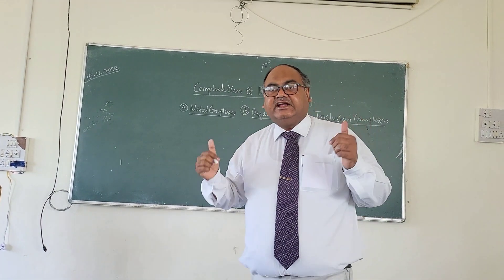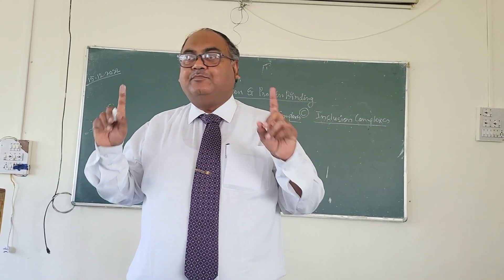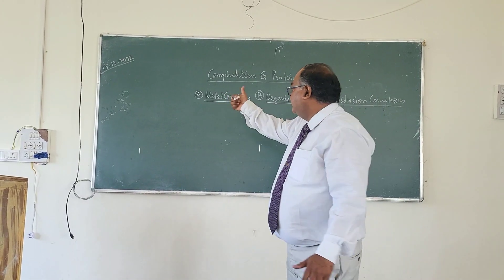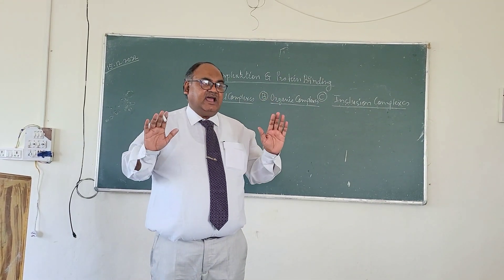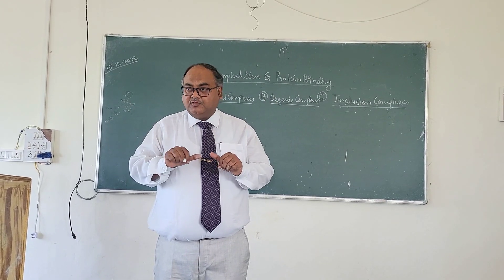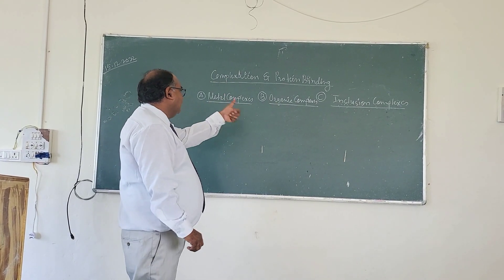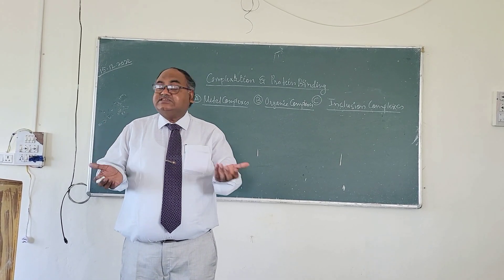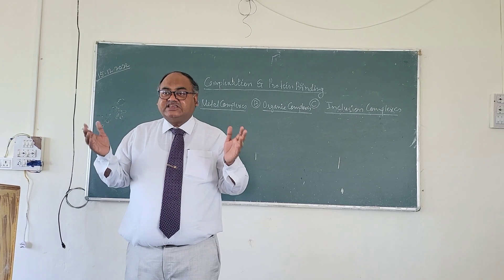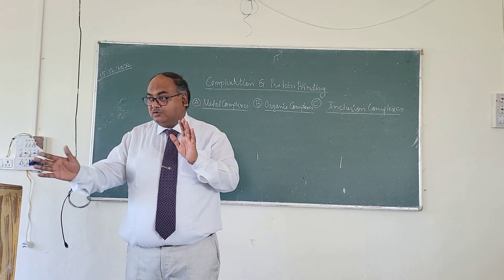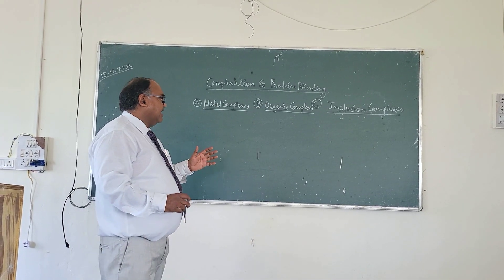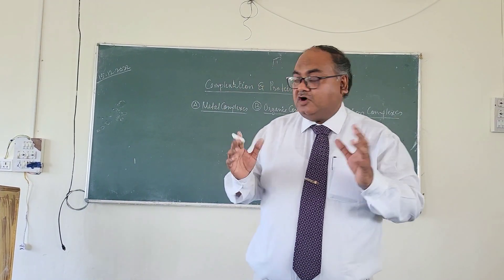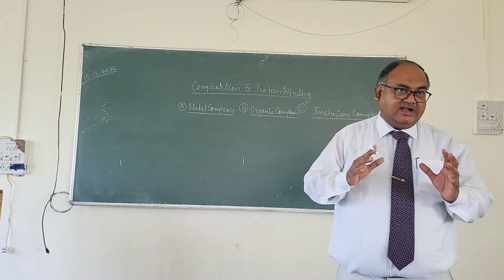The first two types are based on the acceptor species that are involved in the complex formation. In the first type, the metal ions act as the acceptors of lone pairs of electrons. In the second type, it is an organic molecule or organic species which accepts the lone pair of electrons from the donor species. And in the third type, the inclusion complexes are classified on the basis of the geometry of the complex that is generated.